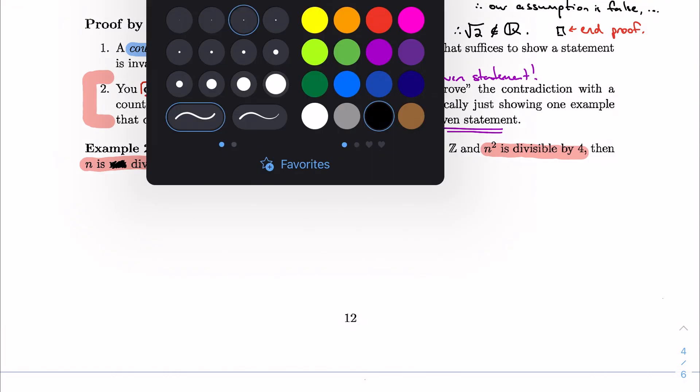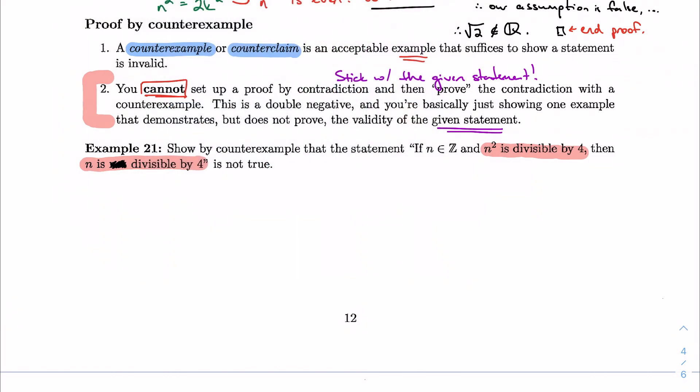And your first gut instinct is like, well, of course it is. Like if n is 4, 4 squared is 16, and 16 is divisible by 4. But this isn't always true. This is one example that does work, but it's not universally true. So let's find a counterexample.